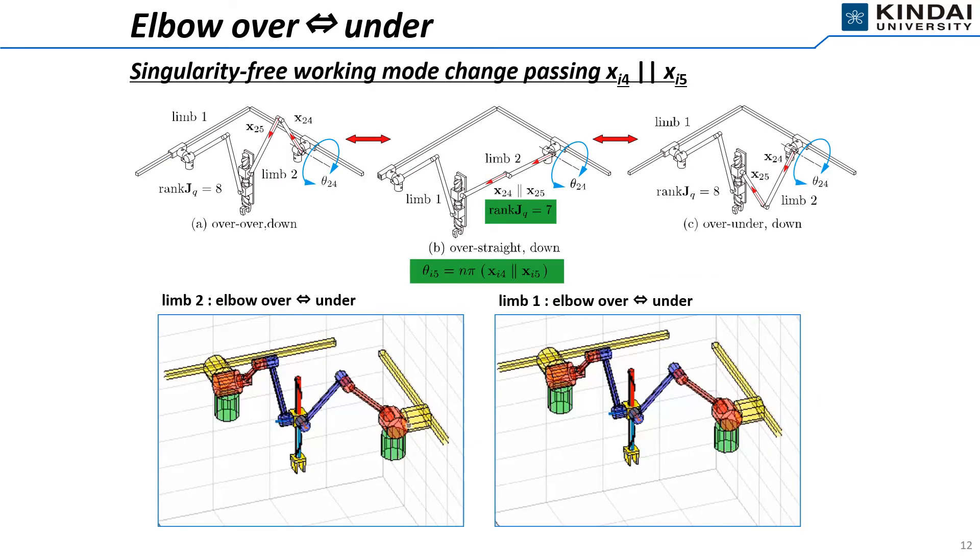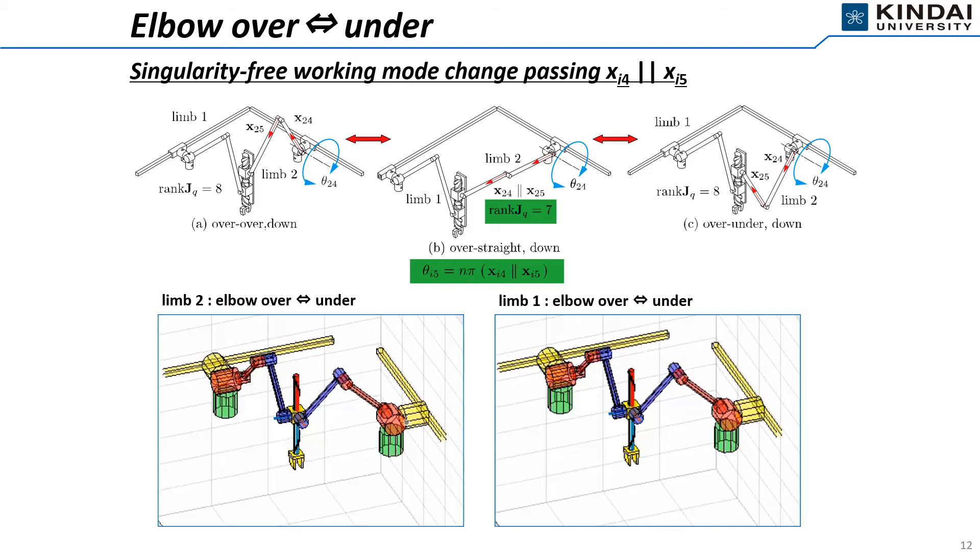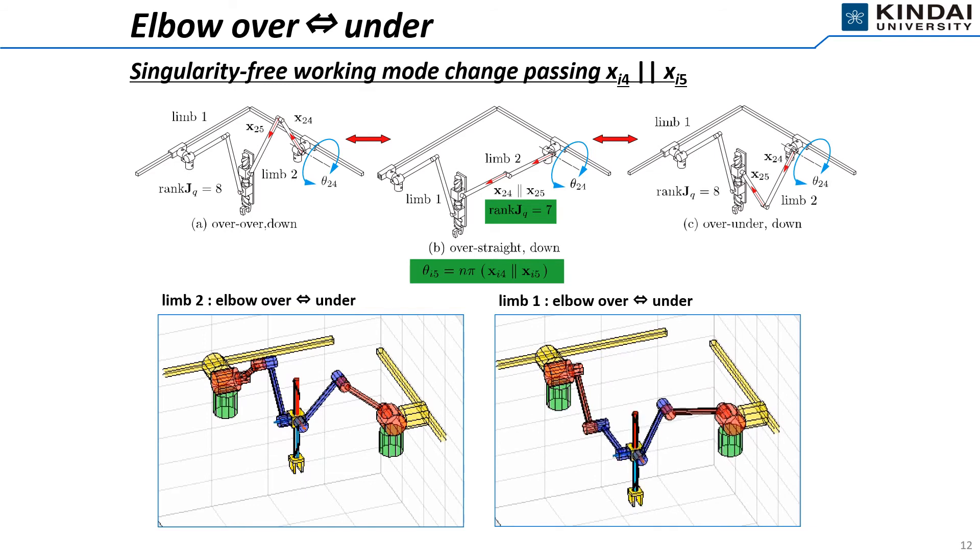This slide represents the singularity-free working mode change passing the green critical condition. As shown in the bottom-left animation, the elbow of the second limb switches between over and under by applying the mode change. In the same way, you can see in the bottom-right animation that the elbow of the first limb switches between over and under by applying the mode change.